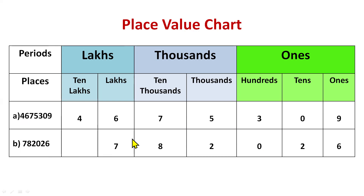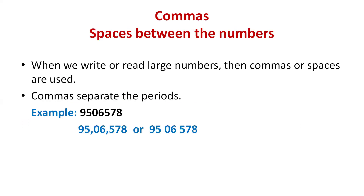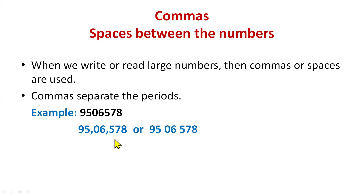You can see here each digit has its own special spot. Now let's talk about commas. Commas help us to read big numbers easily. In some books instead of commas, numbers are separated by spaces. Both methods are just separating periods. For example, 9,50,65,78 is a big number. We separate the periods — first the ones period (three members), then we write a comma, then the thousands period, comma again, and then the lakhs period. This is how commas separate our three houses.